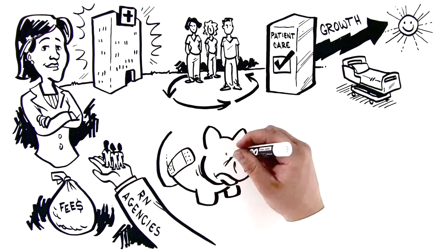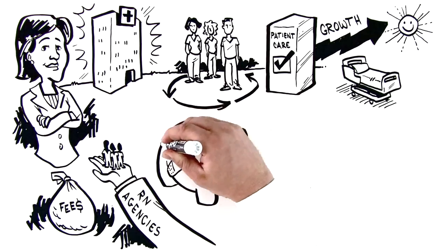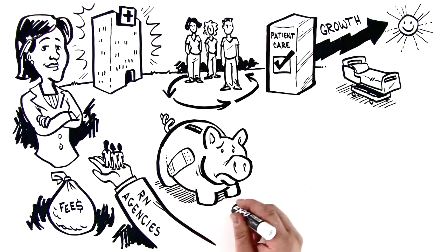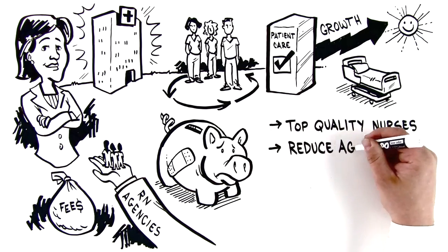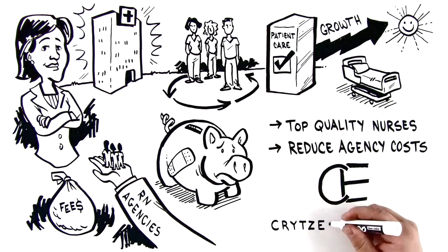Diane needs a permanent fix for this vicious cycle before it spirals out of control. She needs a company that will connect her with top-quality nurses so she can drastically reduce her agency costs. Diane discovers CE Group.